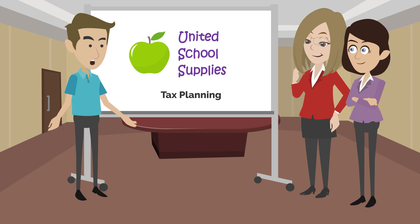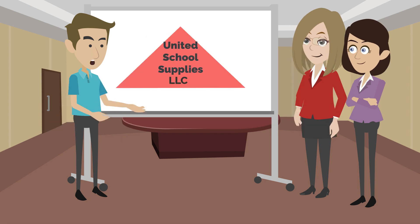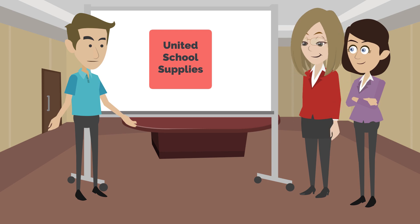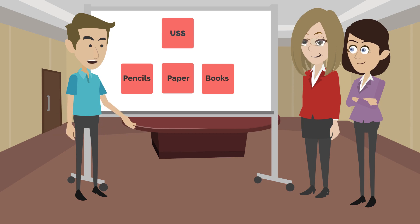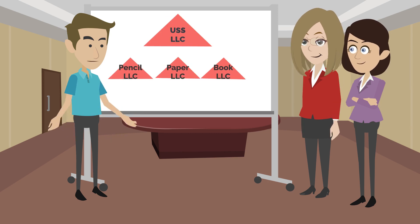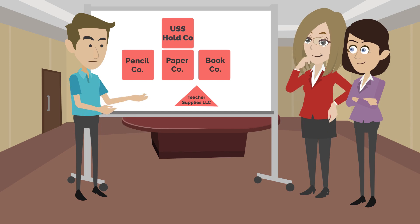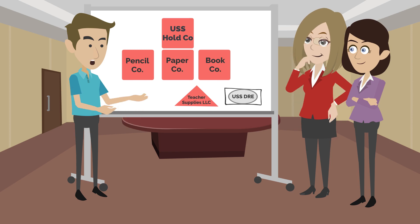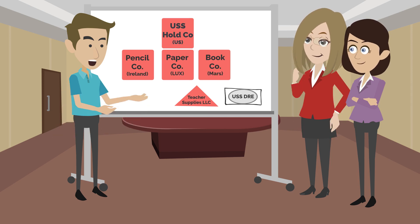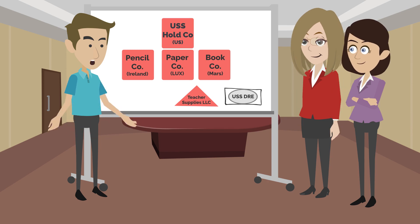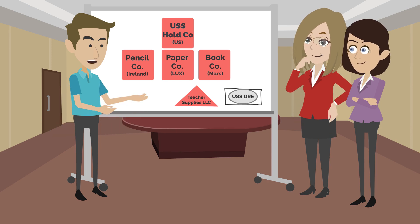Should the business be a corporation or a partnership? Should it be just one large company, or should it be separated into one or more related but different businesses? And if so, should they be corporations, partnerships, a combination of the two, or something else? Should the business entity be entirely in the U.S., or should part of the business be organized in another country? Carefully selecting or changing the type of entity for your business can make a big difference in trying to minimize taxes.